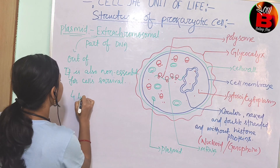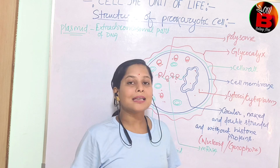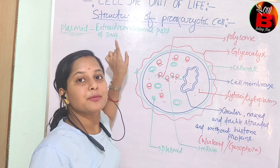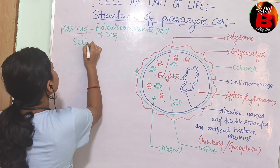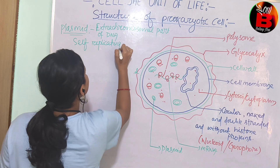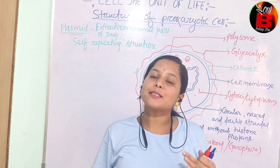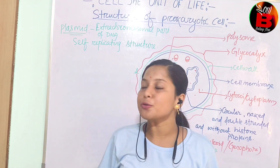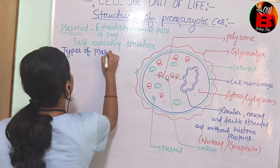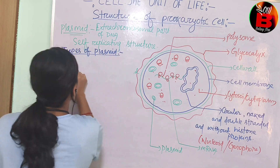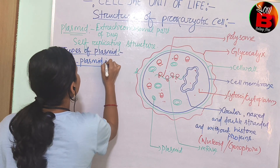There are four types of plasmid. Along with being the extra-chromosomal part of the DNA, the plasmid is also called a self-replicating structure — it replicates by itself.